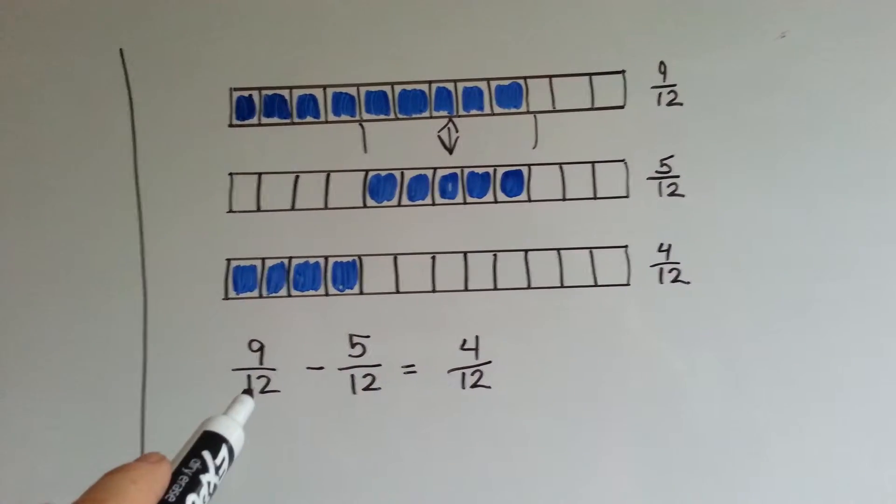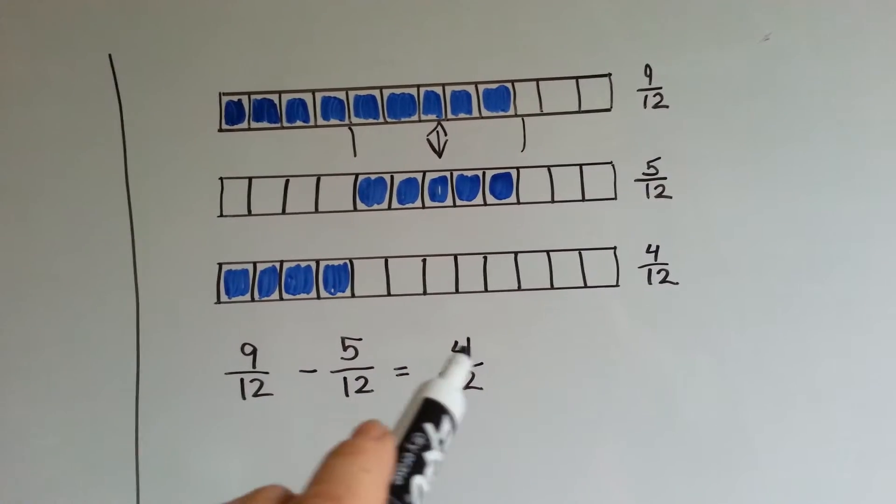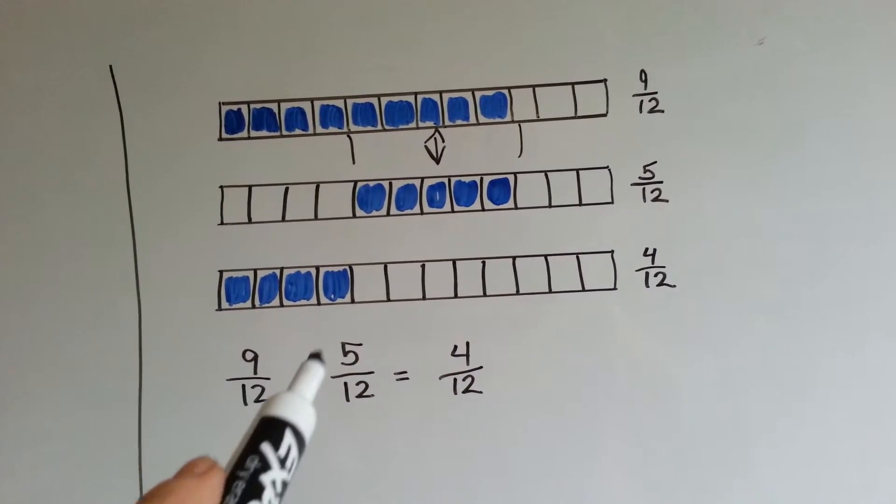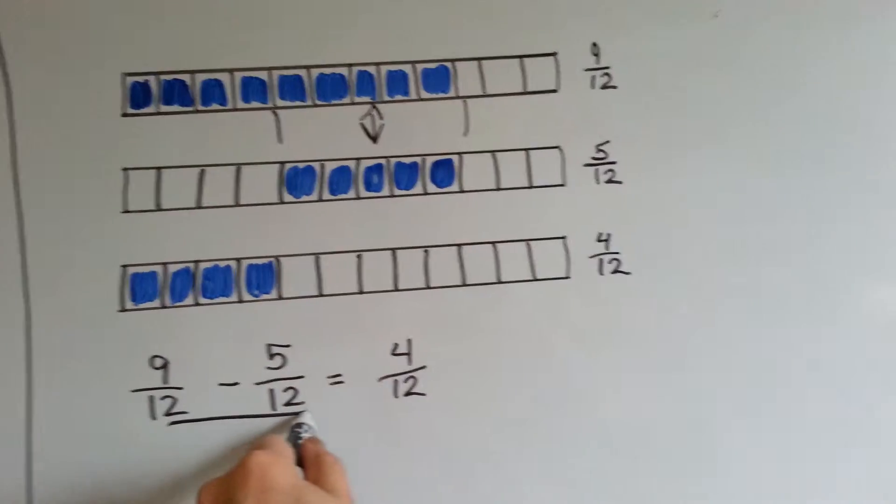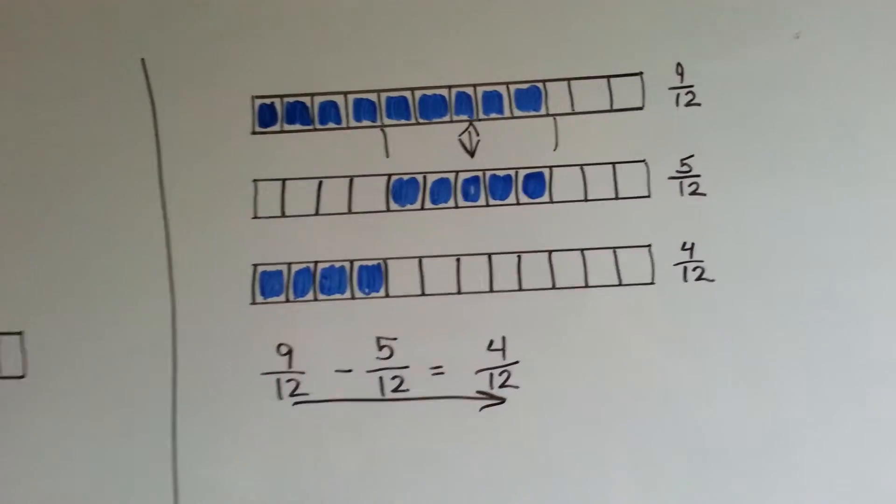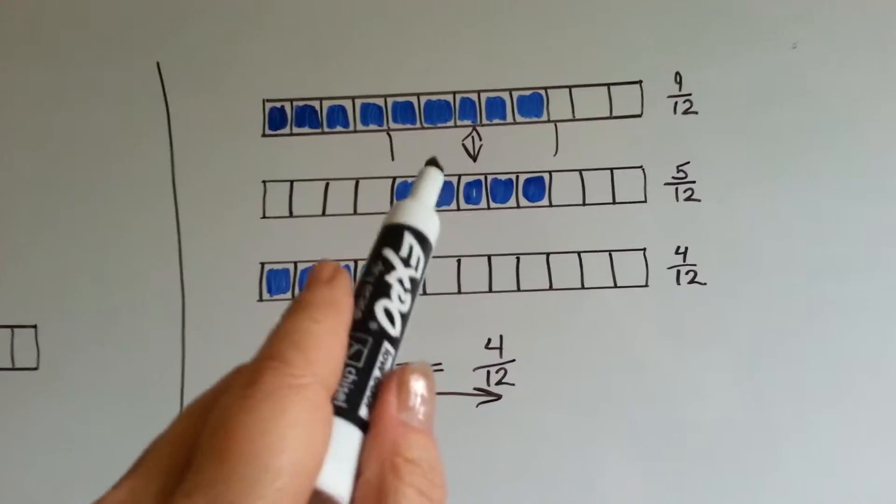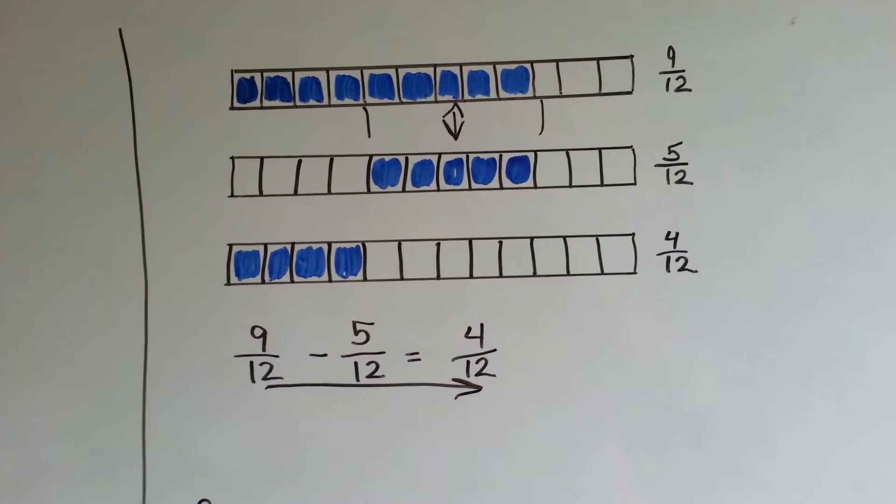Five twelfths. Then that would leave just this four twelfths left over. Nine twelfths minus five twelfths equals four twelfths. Nine minus five equals four. And we just slid the denominator across because we were taking away the same size pieces of the same thing.